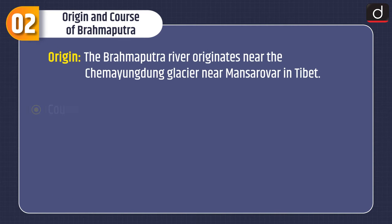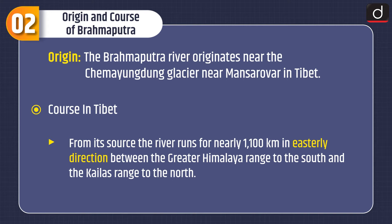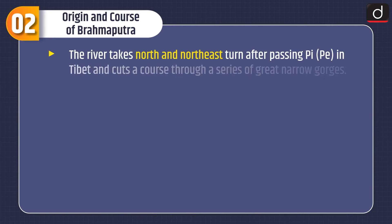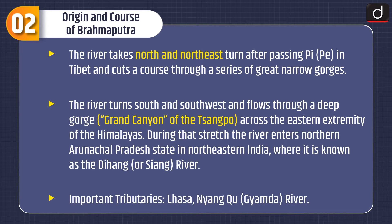Moving on to the origin and course of Brahmaputra: the river originates near the Chema Yungdung glacier near Mansarovar in Tibet. From its source, the river runs for nearly 1,100 km in an easterly direction between the Greater Himalaya range to the south and the Kailash range to the north. The river then takes a north, northeast, south, and southwest turn, flowing through a deep gorge — the Grand Canyon of the Sangpo — across the eastern extremity of the Himalayas. It then enters northern Arunachal Pradesh, where it is known as the Dihang or Siang river. Important tributaries in Tibet are the Lahasa and Nyankyu (Gyamda) rivers.